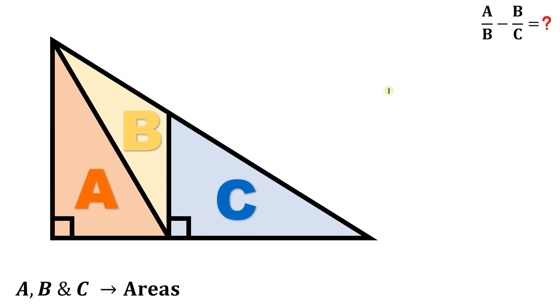Alright, so given this figure, the goal is to find the numerical value of A over B minus B over C wherein the value of A, B, and C are the areas of these three triangles. Now to answer this question,